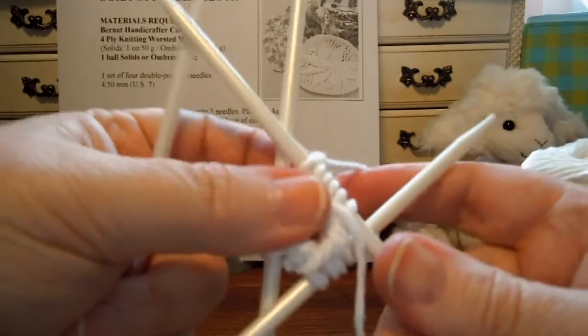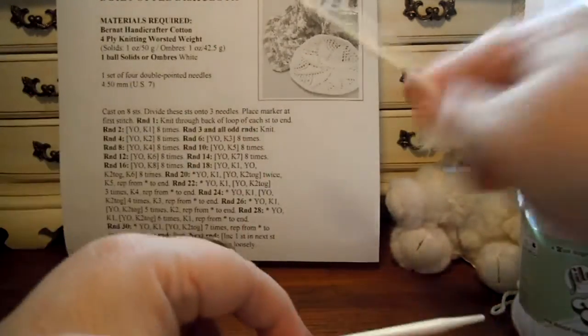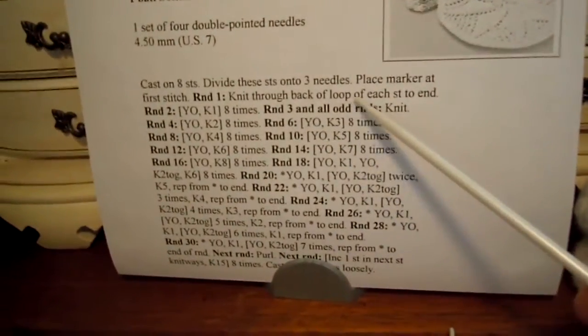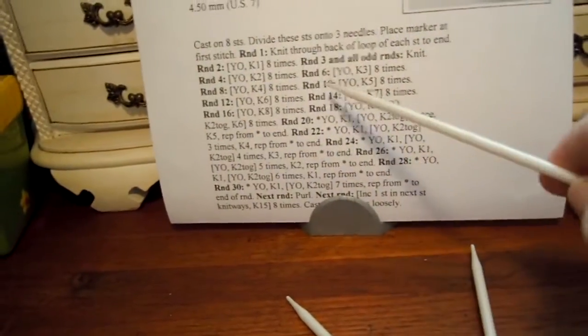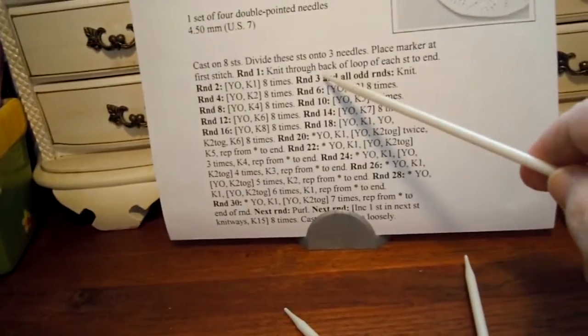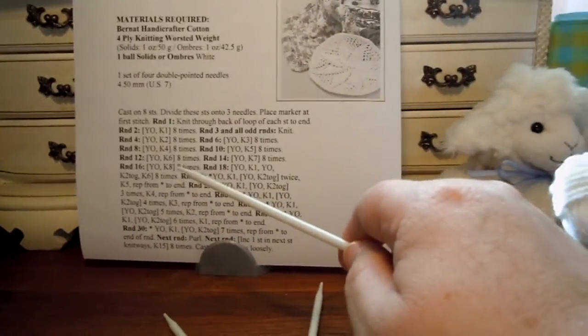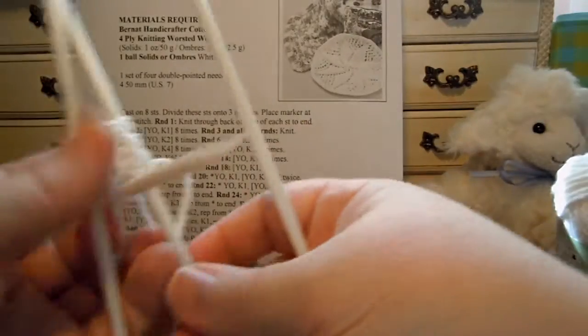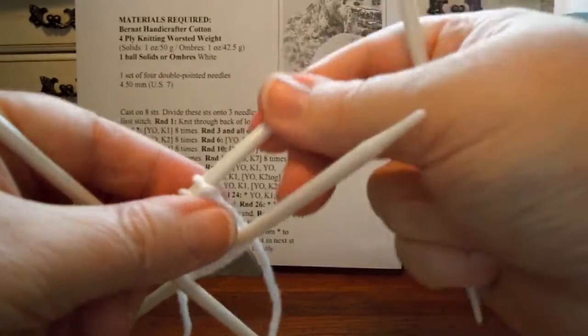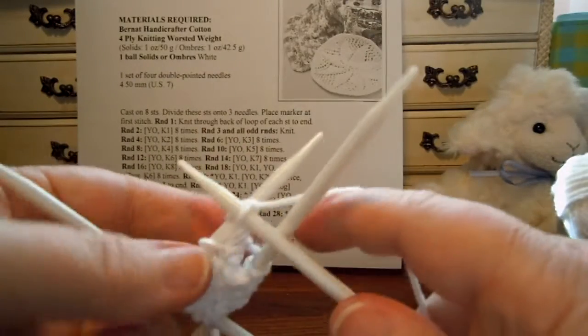So now we're ready for round three. Round three says to knit. And you'll notice on the design that it says round three and all odd rows. So all these other rows, you'll see it says round four, round six, round eight, round ten. So you're going to have to remind yourself that you always have to knit a row after each one of these rows. So that's just something to keep in mind as you go with this pattern. So for now, we're going to knit a row. A round. These are not rows anymore. These are rounds.